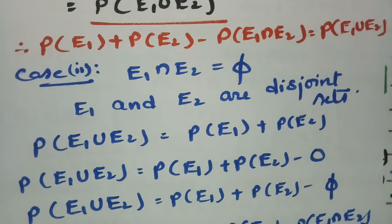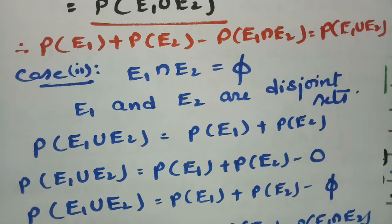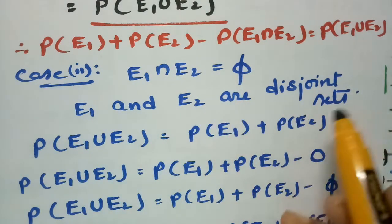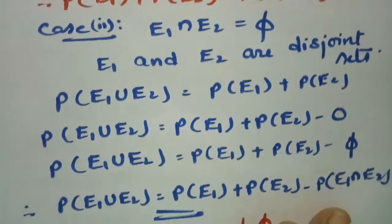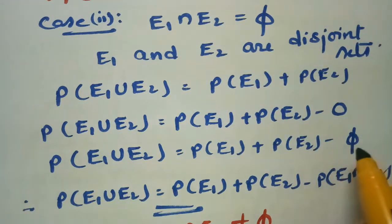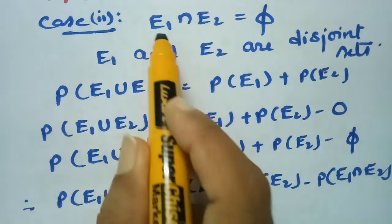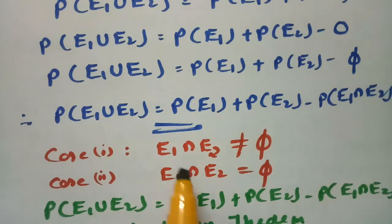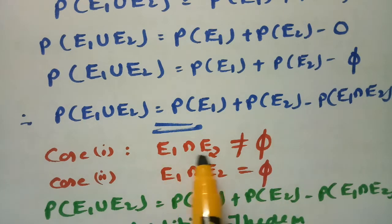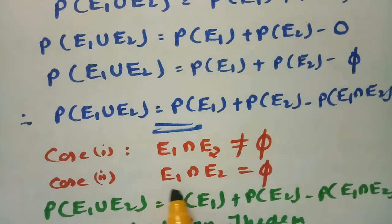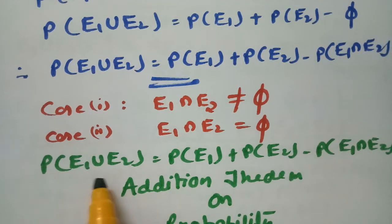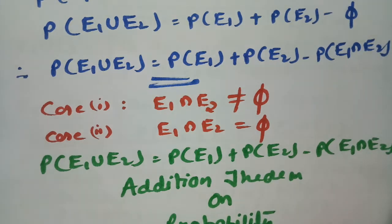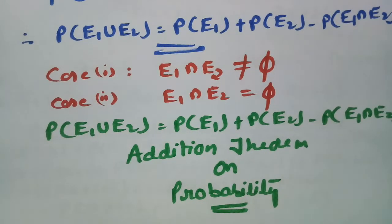For Case 2, the intersection is empty, so E1 and E2 are disjoint sets and the union is written as the addition of the two sets. Writing minus 0, the empty set is nothing but E1 ∩ E2. Therefore, from both cases — whether E1 ∩ E2 is non-empty or empty — we get P(E1 ∪ E2) = P(E1) + P(E2) - P(E1 ∩ E2). This is the Addition Theorem on Probability.